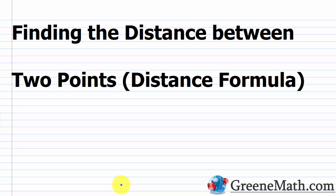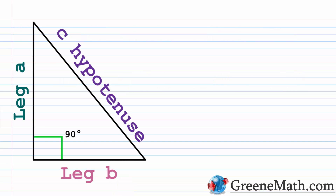In this lesson, we want to review finding the distance between two points using the distance formula. In our last lesson, we reviewed the coordinate plane and how to plot points or ordered pairs on the coordinate plane. So now what we're going to do is discuss how we can find the distance between two points, or two ordered pairs, on our coordinate plane.